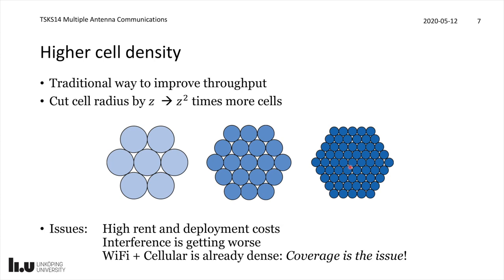Most users are suddenly at the edges of cells where they experience more interference from neighboring cells. Higher cell density will definitely be seen in certain areas, particularly indoors. But we have Wi-Fi deployed almost everywhere inside buildings and cellular coverage in urban areas to a large extent. Just densifying won't be able to find all the spots with bad performance today. We will see a larger cell density in the future, but it might not be the leading force in increasing network throughput anymore.